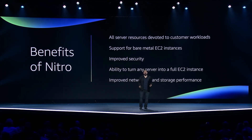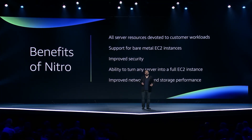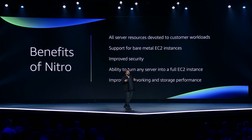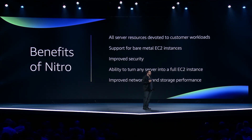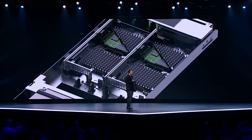Nitro helps us secure our EC2 instances and provide unique security capabilities like Nitro enclaves. It also makes it easy for us to turn any type of server into an EC2 instance — this is why we're able to support Intel chips, ARM chips, AMD chips, Graviton chips, even Mac hardware. By doing all our network and storage virtualization in the Nitro controller, we reduce variability and avoid interfering with customers' workloads, which improves performance. Supporting any type of hardware and improving performance sound an awful lot like our problems with SSDs — so it probably won't surprise you to hear that we built a Nitro SSD.